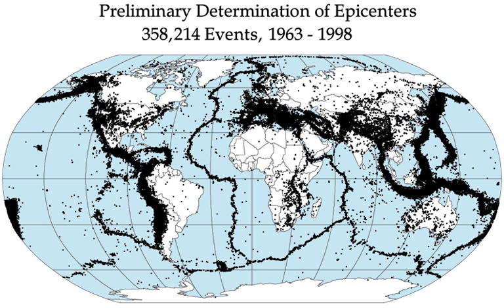It is estimated that around 500,000 earthquakes occur each year, detectable with current instrumentation. About 100,000 of these can be felt. Minor earthquakes occur nearly constantly around the world in places like California and Alaska in the U.S., as well as in El Salvador, Mexico, Guatemala, Chile, Peru, Indonesia, Iran, Pakistan, the Azores in Portugal, Turkey, New Zealand, Greece, Italy, India, Nepal and Japan, but earthquakes can occur almost anywhere.